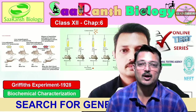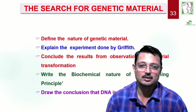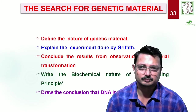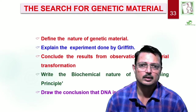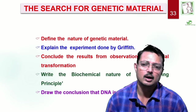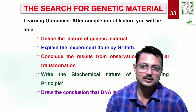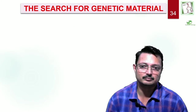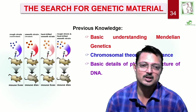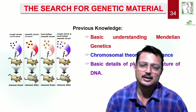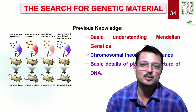Today, we will learn about the biochemical characterization. You must be aware of the nature of genetic material, a little bit about Griffith's experiment, and we are going to conclude from the transformation experiment. We should also be able to describe the biochemical nature of the transforming principle, and above all, conclude that DNA is the genetic material. The prerequisite understanding includes Mendelian genetics, chromosomal theory of inheritance, and basic details of the physical structure of DNA.